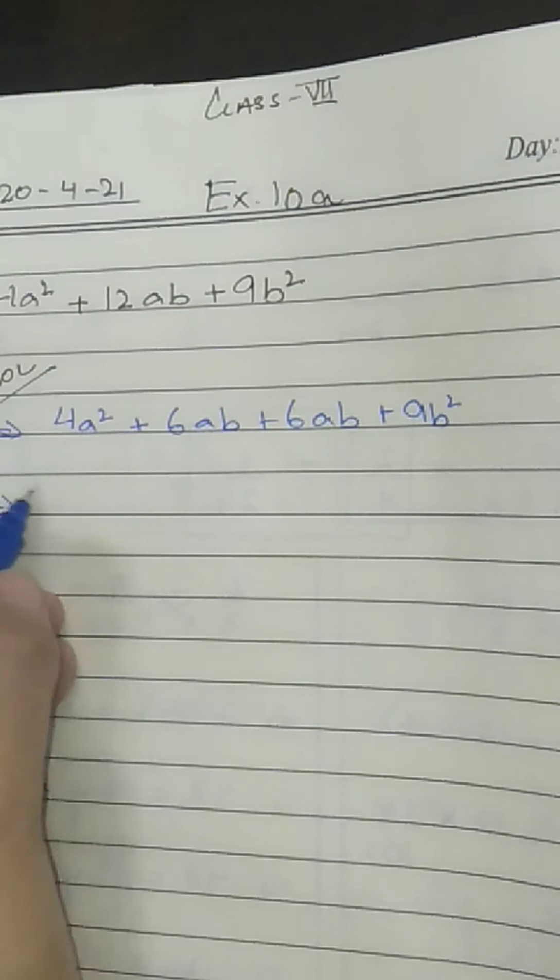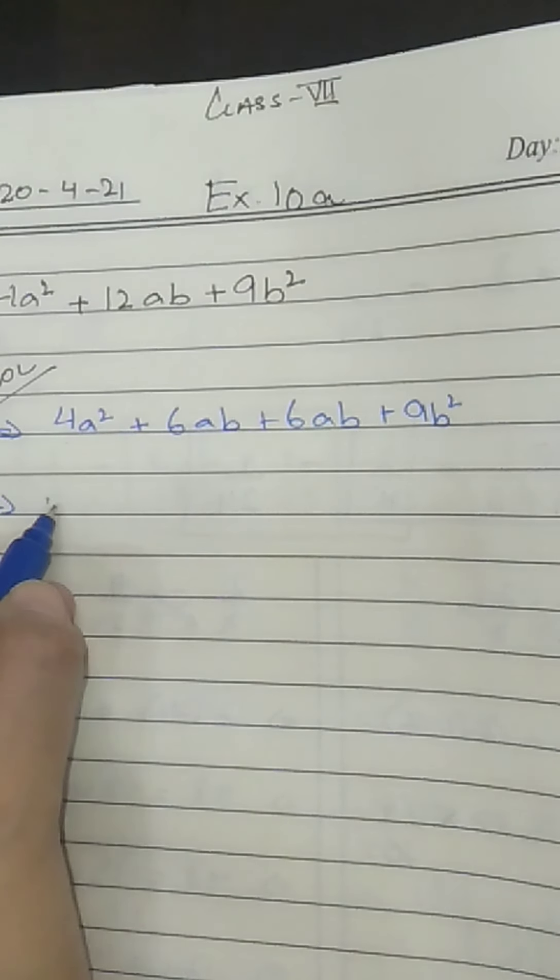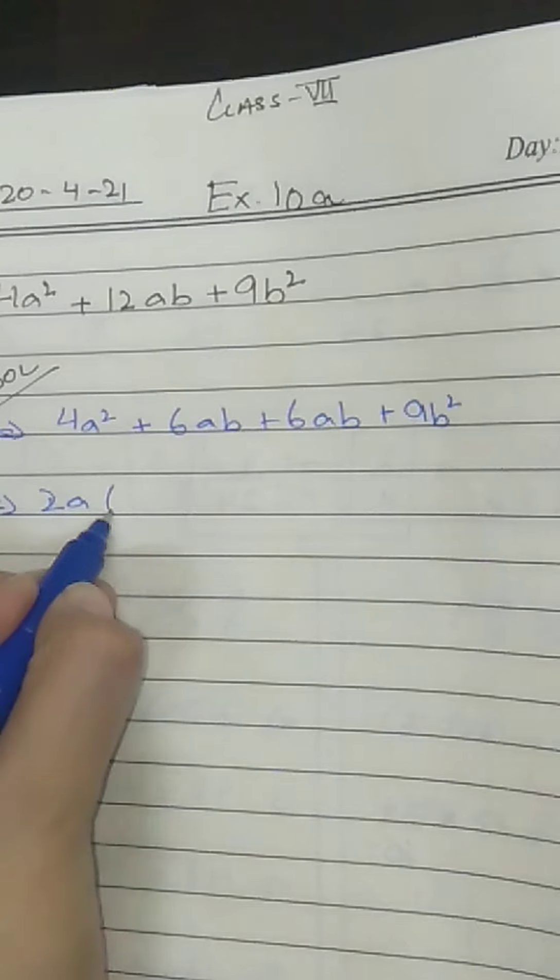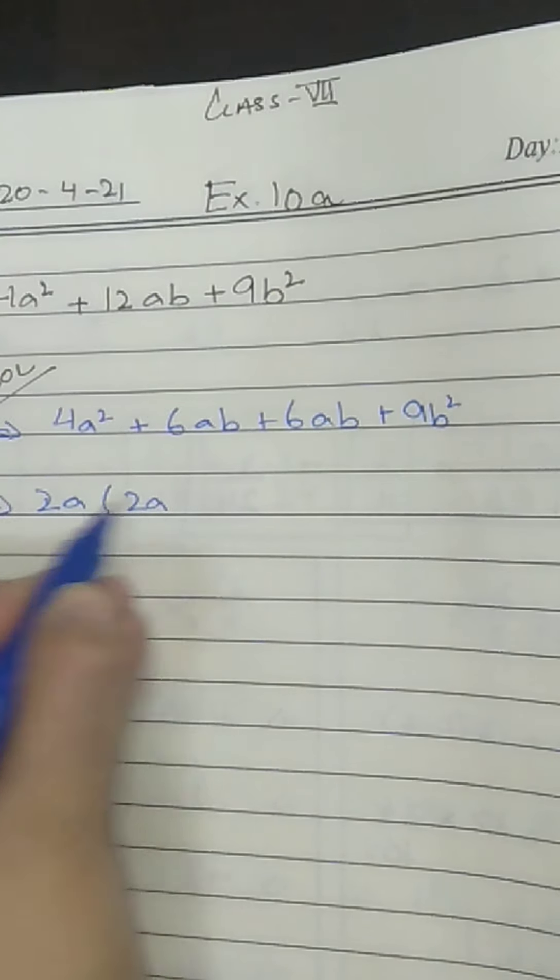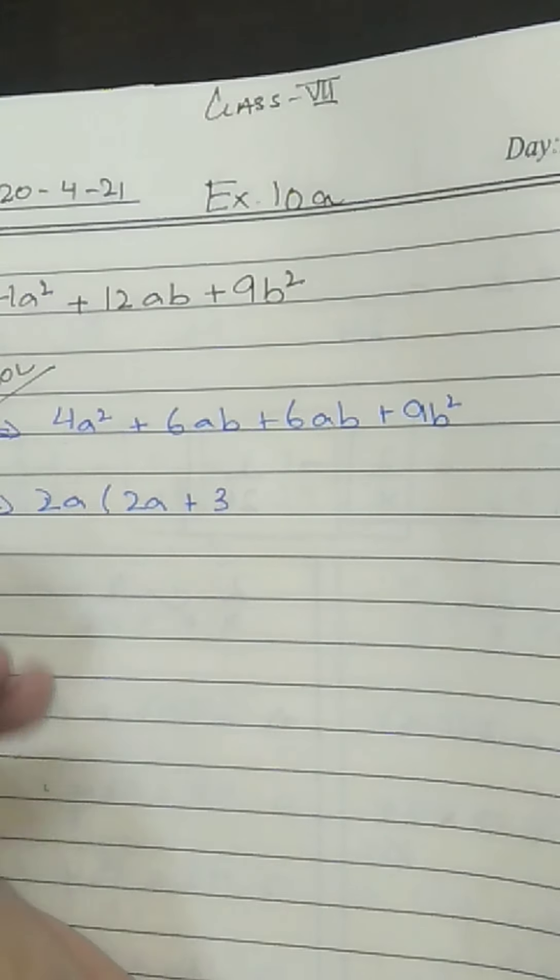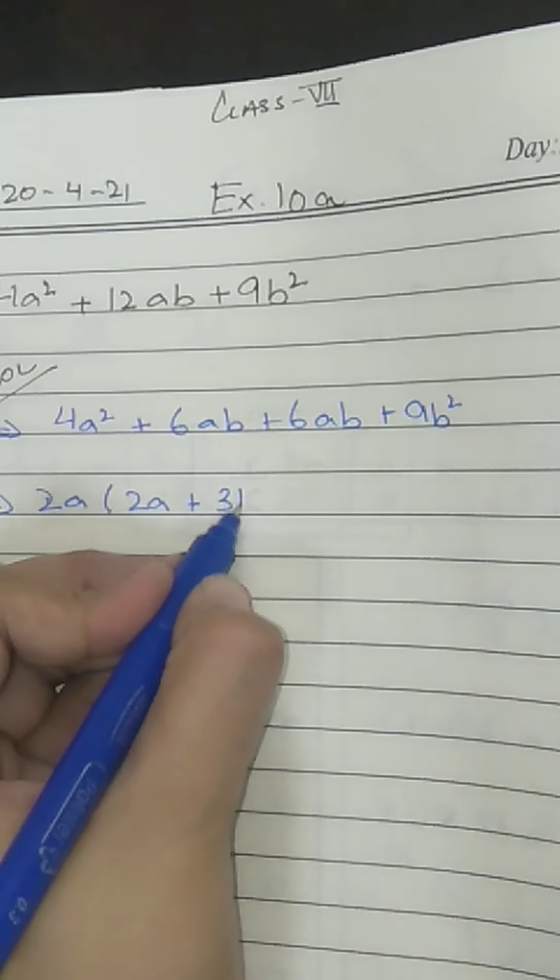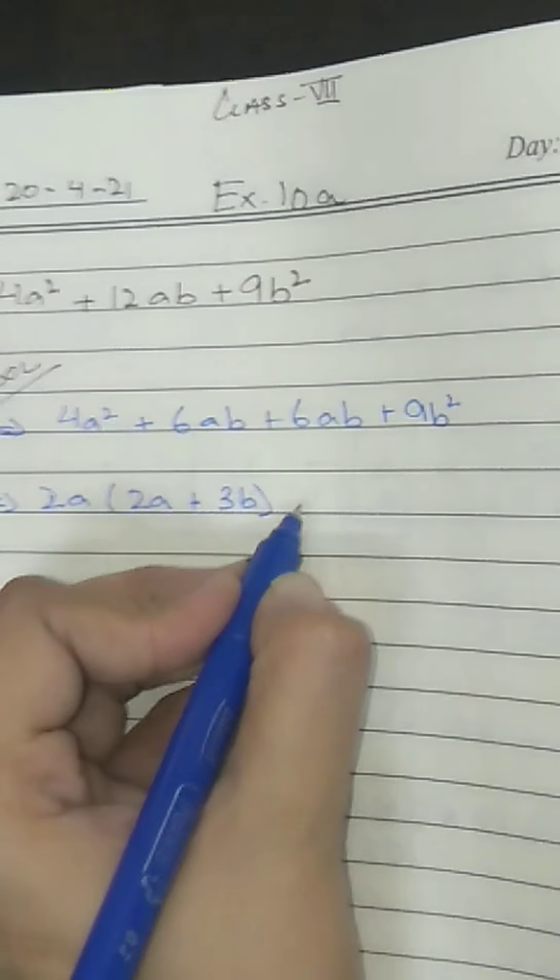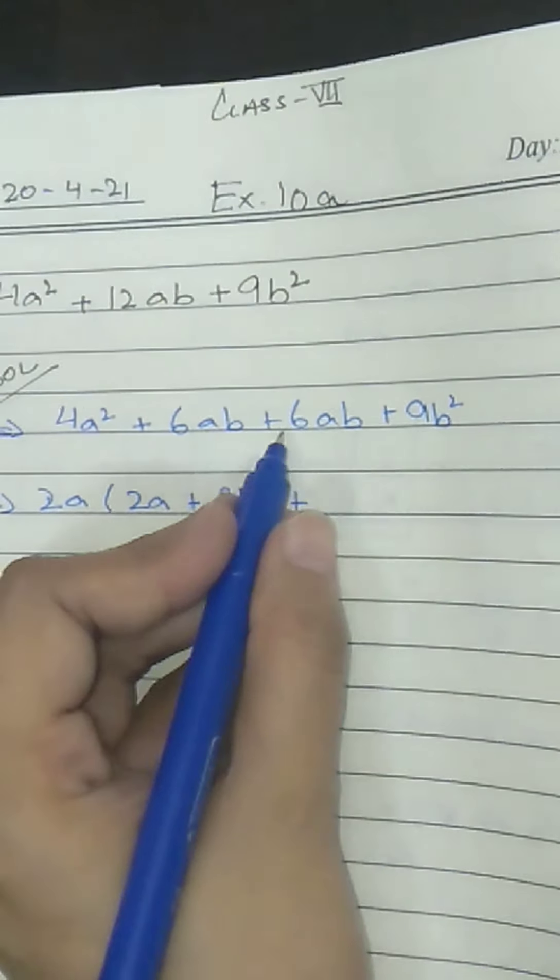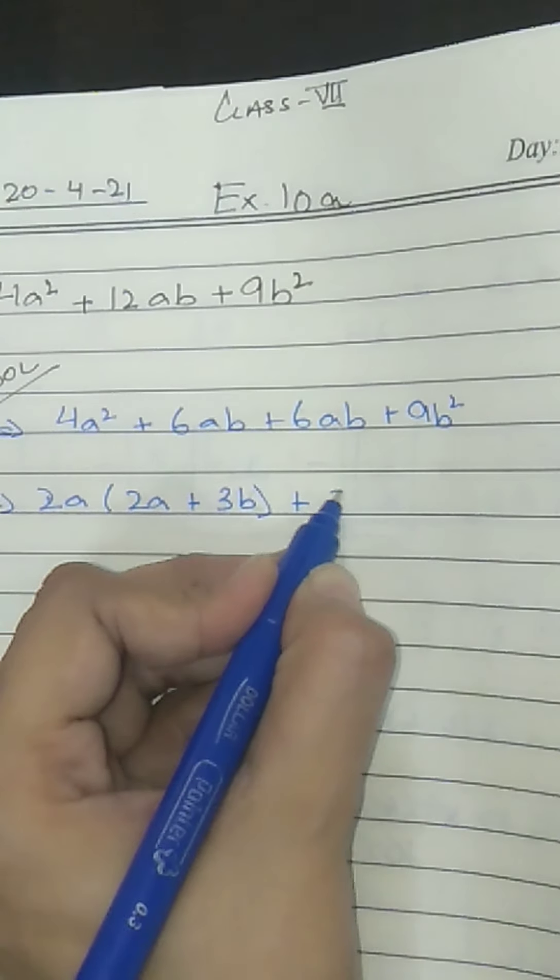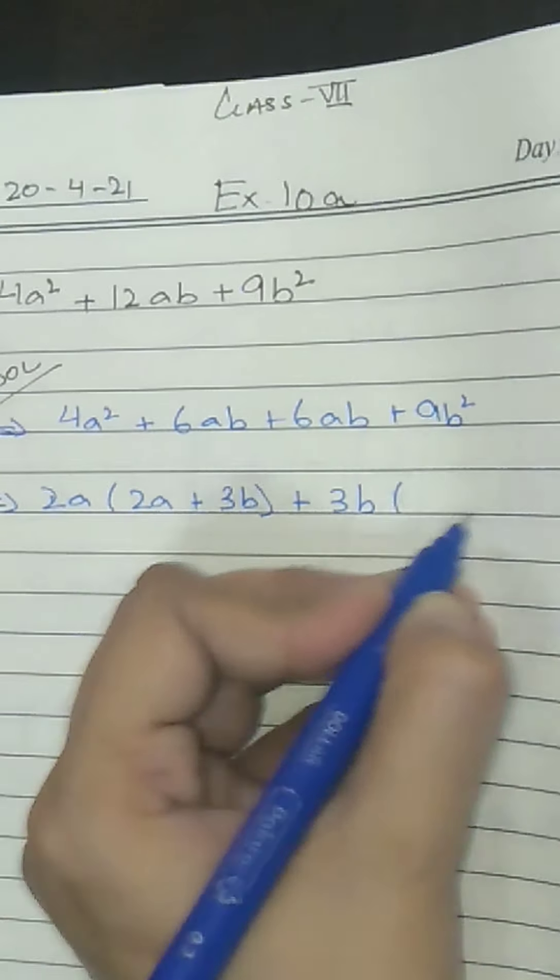4A² is 6A, so what is the common? The common is 2A. So what is remaining? 2 times 2 is 4 and A² divided by A is A. 2 times 3 is 6, so 3 is over here. A is outside. The remaining is B.